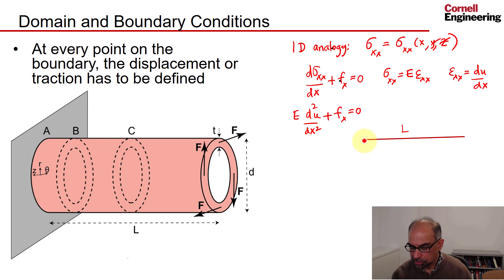Let's say the left end of the bar is fixed. So you would say U equal to 0 at the left end of the bar. And at the right end of the bar, let's say we know what the normal stress is, there's an applied normal stress.